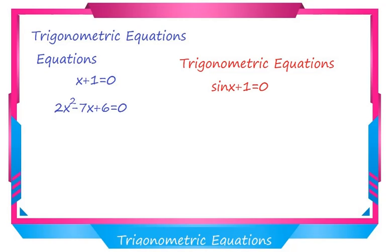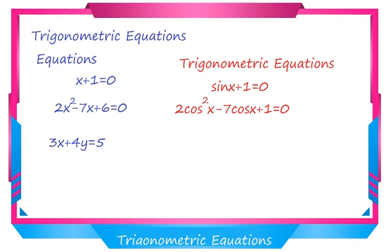Let us take one more example. 2x squared minus 7x plus 6 equal to 0 is an equation. Similarly, 2 cos squared x minus 7 cos x plus 1 equal to 0 is a trigonometric equation. Also, 3x plus 4y equal to 5 is an equation of two variables. Similarly, 3 sin x plus 4 cos x equal to 5 is a trigonometric equation which contains two trigonometric functions.